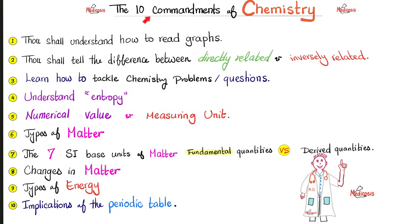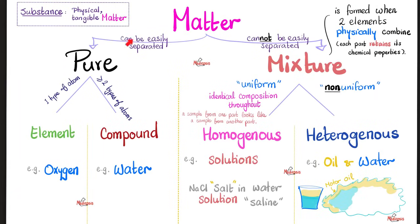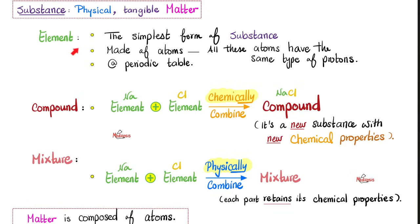If you remember my 10 commandments of chemistry, many of them included matter and energy, as well as the implications of the periodic table. Matter could be pure or could be a mixture. Pure matter could be an element or a compound. Today we're talking about the trends of the periodic table of the elements. What's an element? It's the simplest form of a substance, which is physical matter. An element is made of atoms — for example, the oxygen element is made of oxygen atoms.